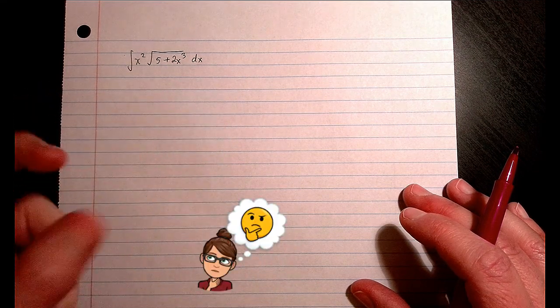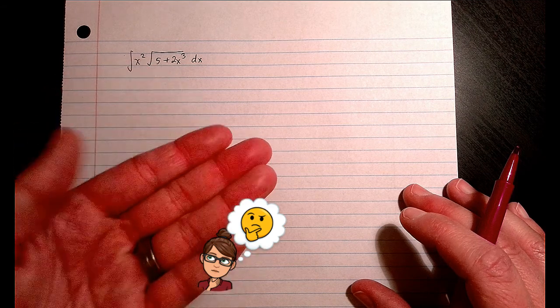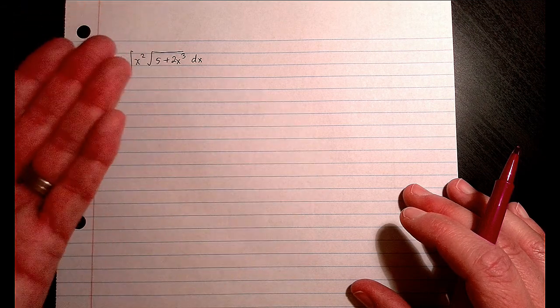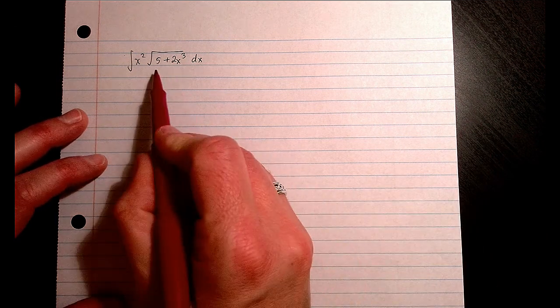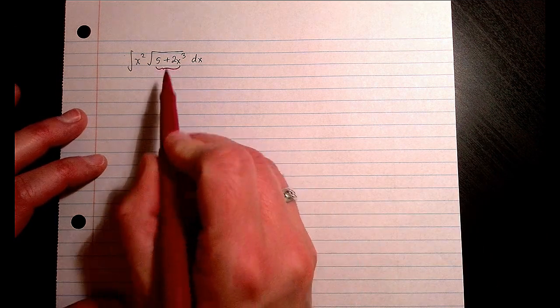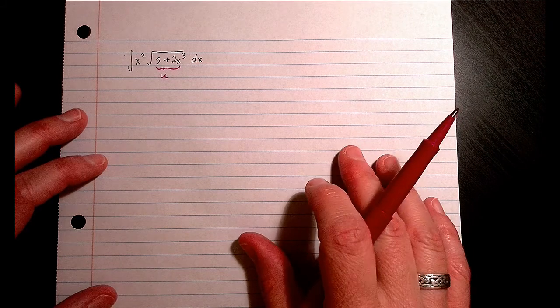You want to look for something that's inside that, when you differentiate, it could create something outside. So I'm looking at this inside right there, and I'm thinking that is a good idea for my u.